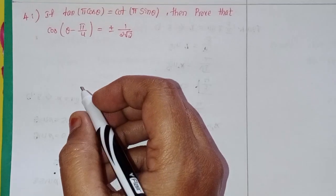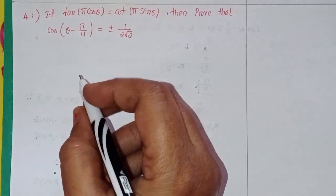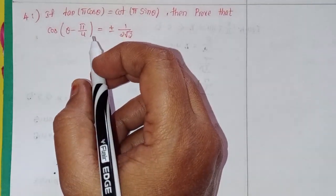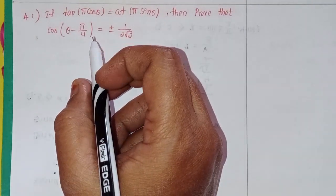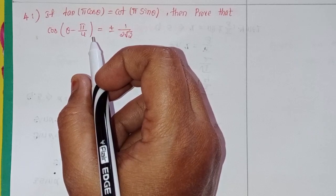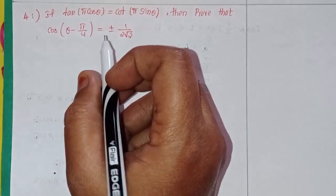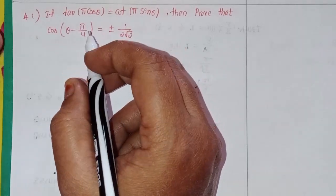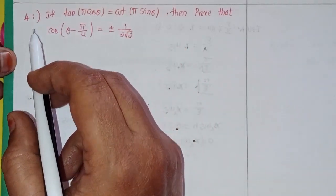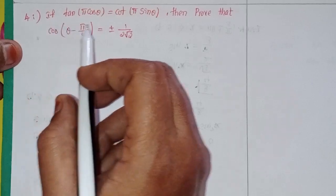Hi viewers, I am Shaheen and welcome to my channel. Today we will discuss intermediate first year 1A, chapter number 7, trigonometric equations, exercise 7A, third domain, fourth problem.